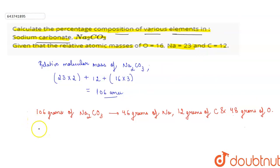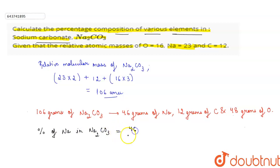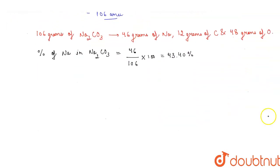Percentage of sodium in sodium carbonate will be 46 divided by 106 into 100, which will give the value 43.40 percent.